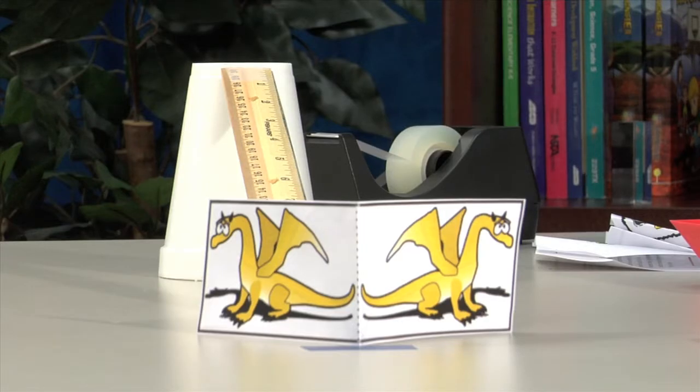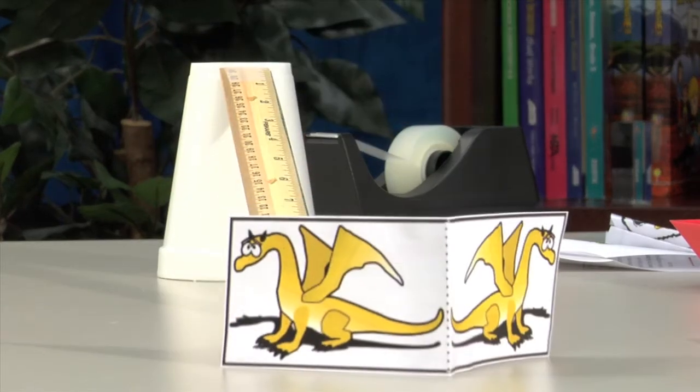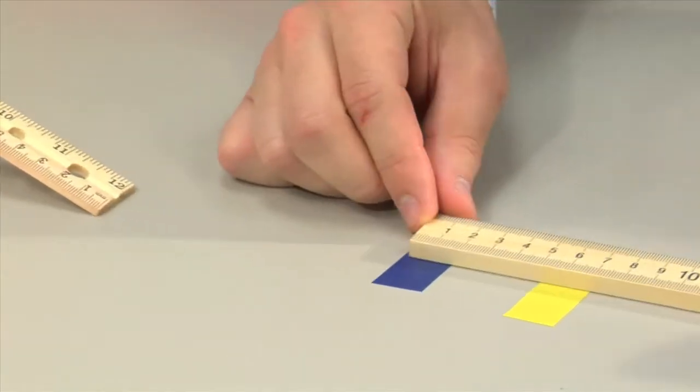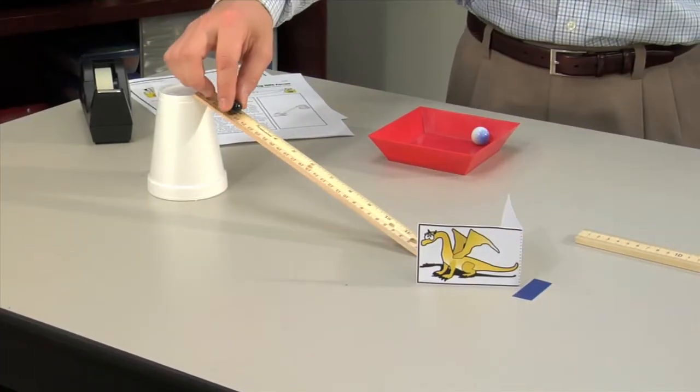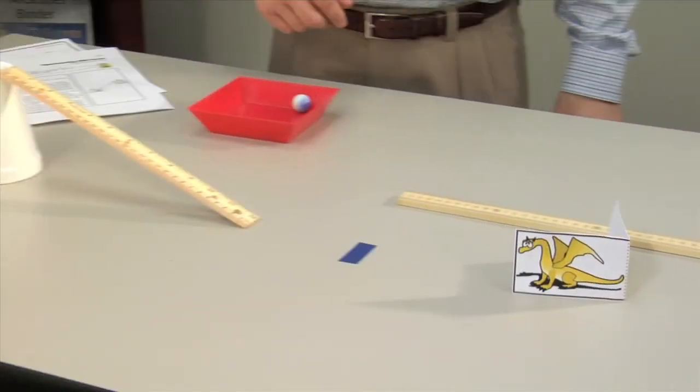Perform a second trial and place the marble 4 centimeters higher than before. Again, measure how far the dragon moves back from the starting mark. Move the small marble higher with each additional trial.